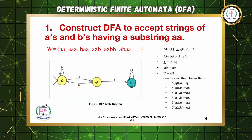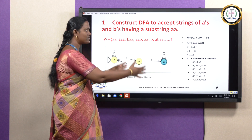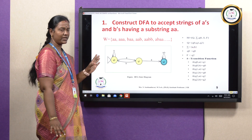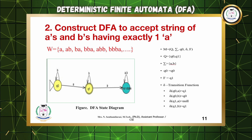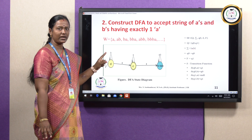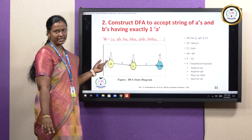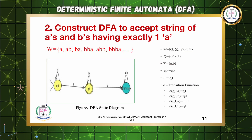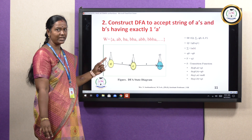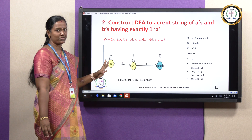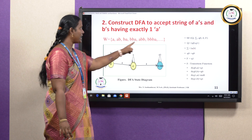To summarize: first draw the transition diagram, then write all five tuples. This is very important. The second problem: construct a DFA to accept strings of A's and B's having exactly one A. This means the accepted word must contain only a single A — not more than one. Any number of B's is allowed, but exactly one A is required.